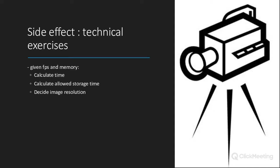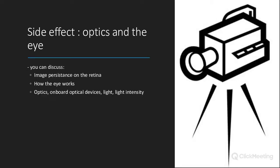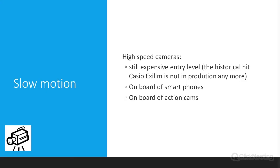For instance, you can give exercises to pupils and ask them to calculate the amount of memory needed to prepare a slow motion — the storage they need, the image resolution that's allowed for what they want to do. You can discuss many topics in physics or science with this.